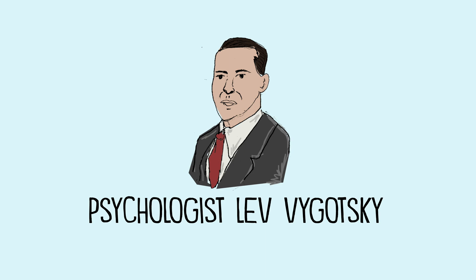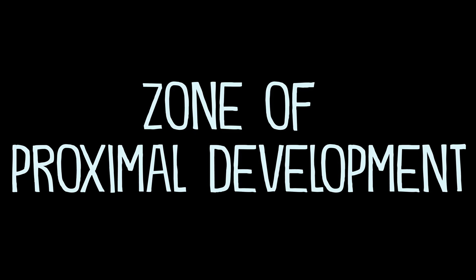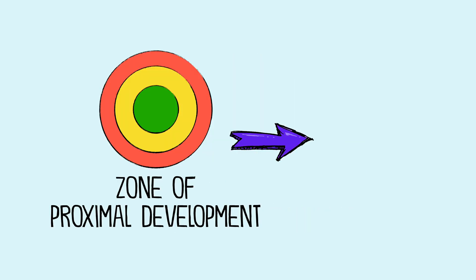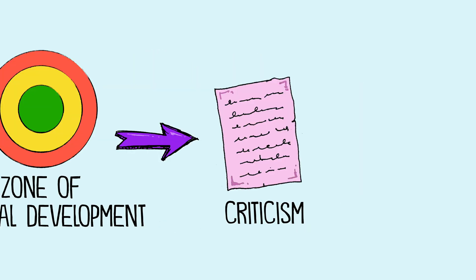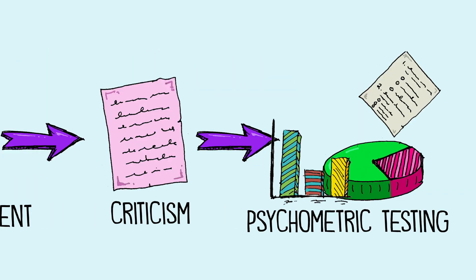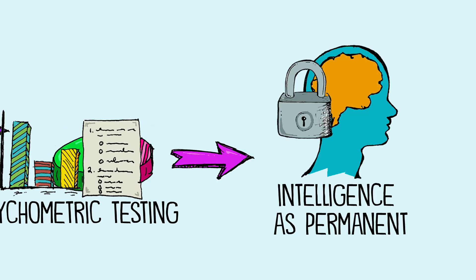In 1962, the Russian psychologist Lev Vygotsky called this space the Zone of Proximal Development, or ZPD. He developed this idea as a criticism of psychometric testing in education, which viewed intelligence as permanent and fixed.